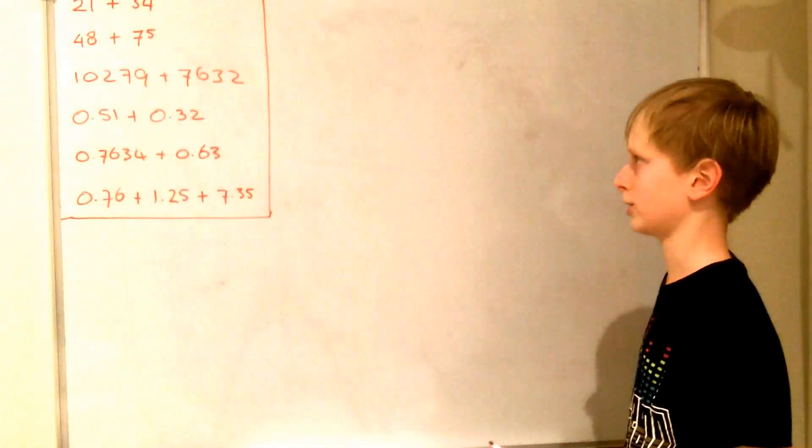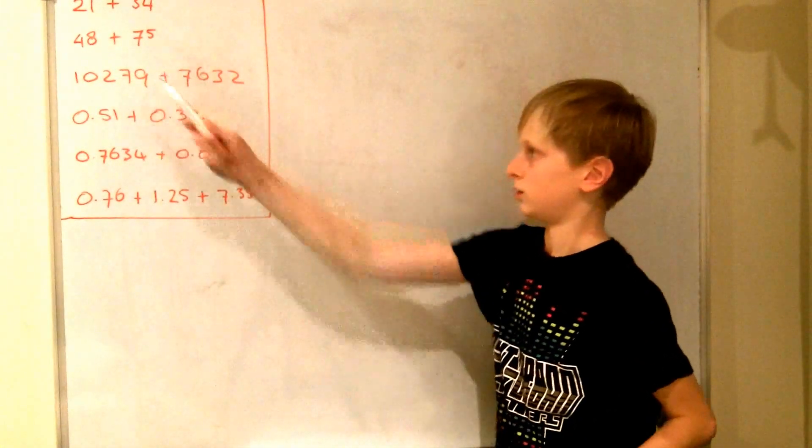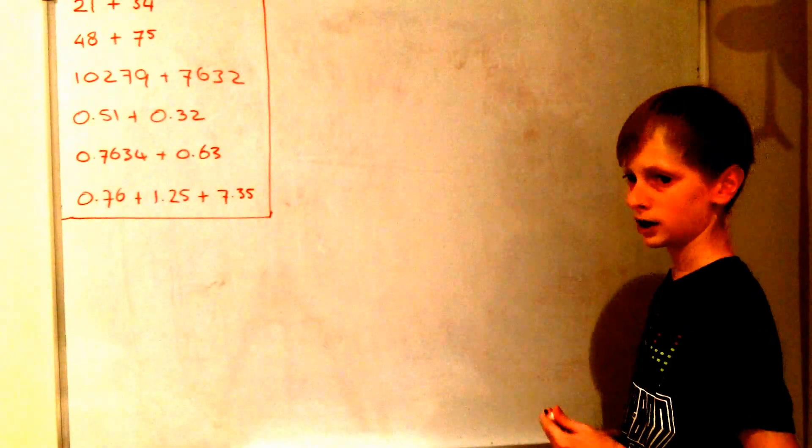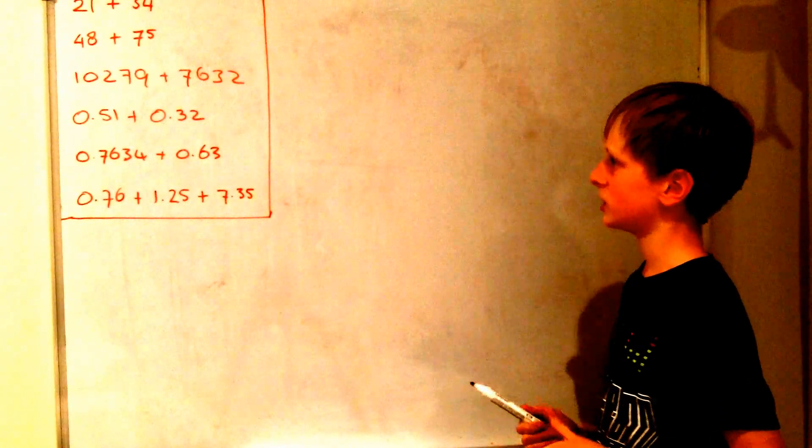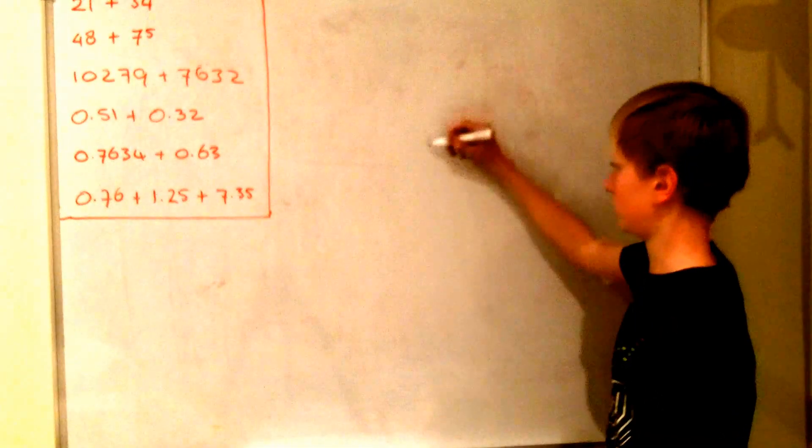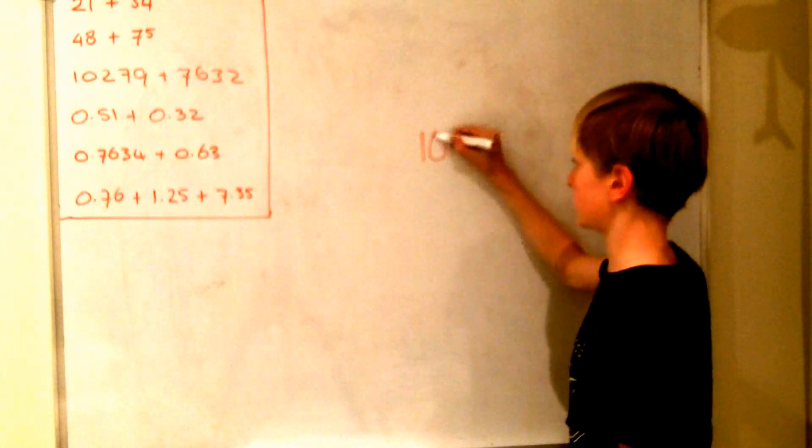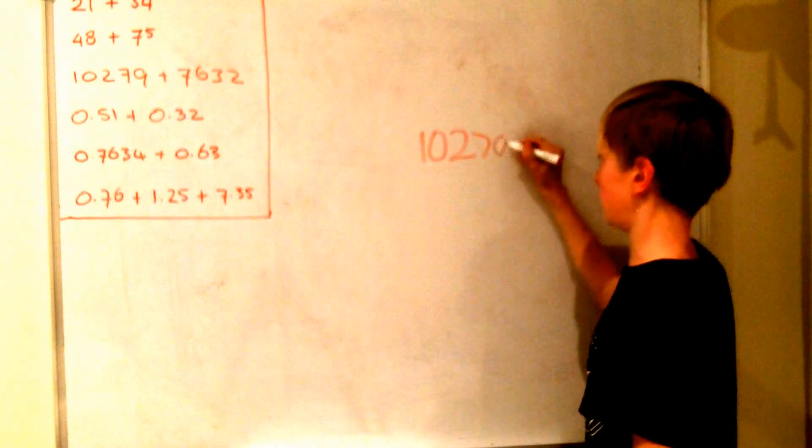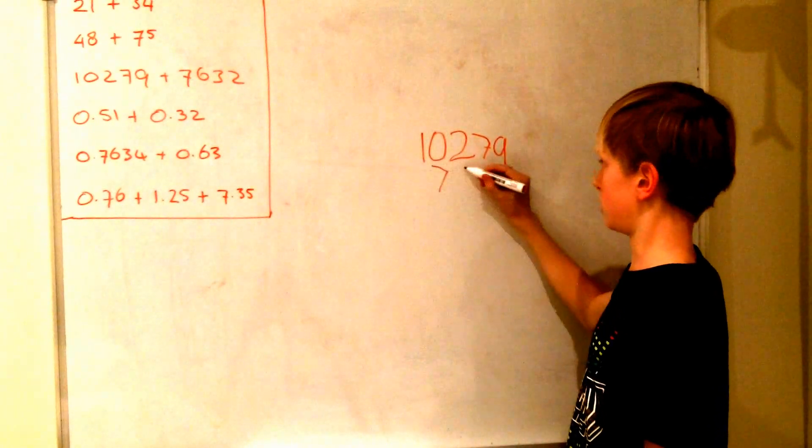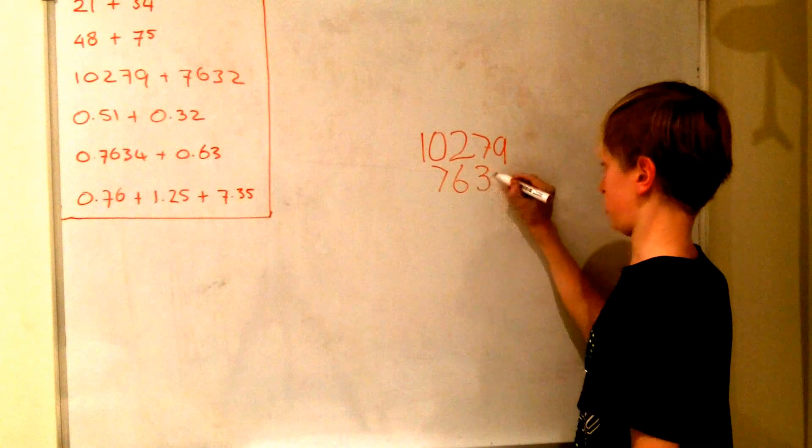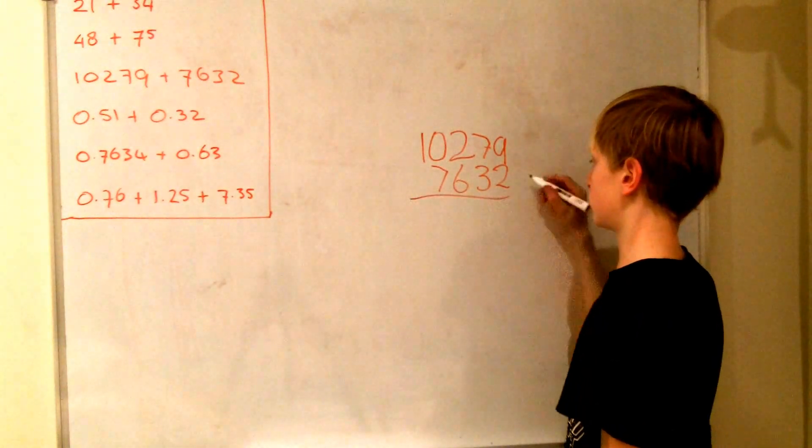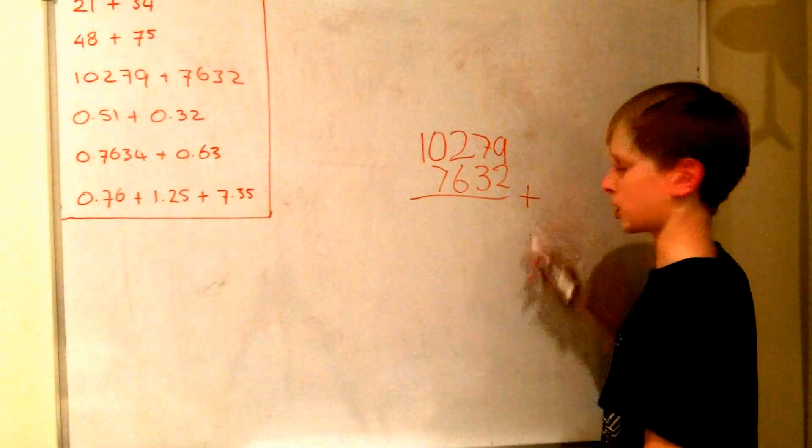Now I'm going to show you how to do it with really large numbers. So you get 10,279 plus 7,632. So again we just write them underneath each other. 10,279 and 7,632. And as you can see the last digits are in line again. So now we write the line underneath it with the plus sign.